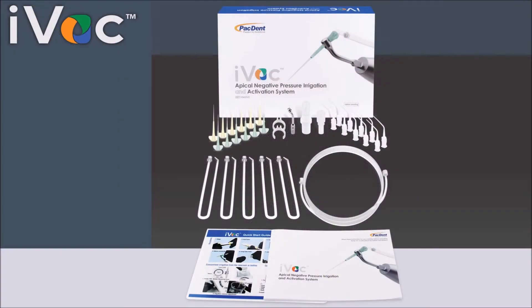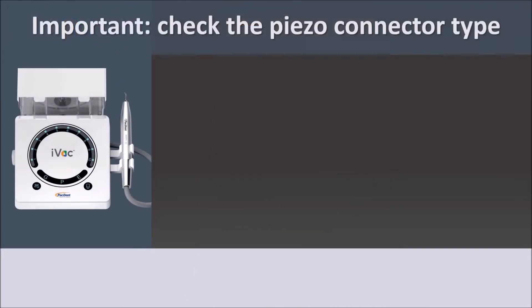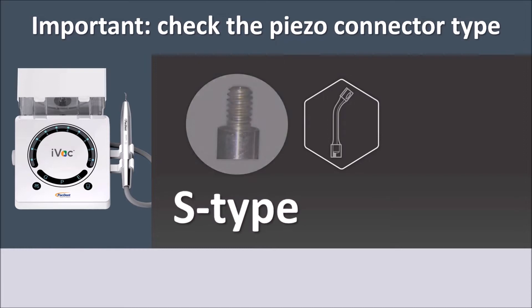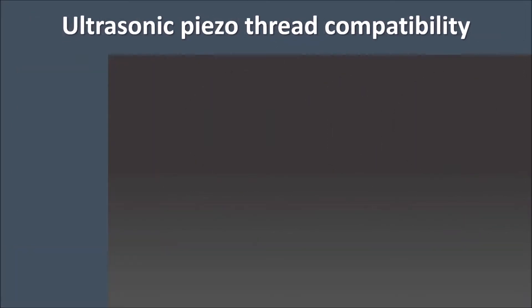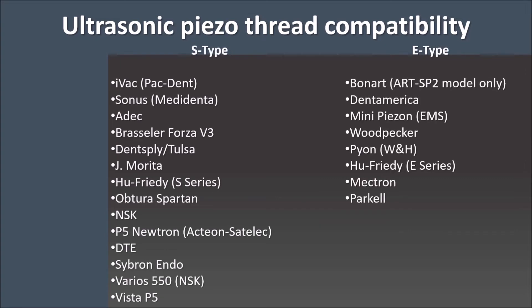Let's take a look at the iVac introductory kit and its components. First, it is imperative to recognize the type of connection used by the piezo ultrasonic device. The most common are the S-type and E-type. Some examples of S-type and E-type ultrasonic piezo devices are listed in this table. However, it is important to consult the instructions manual of your equipment to avoid using the wrong tip type.